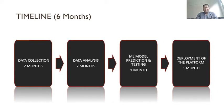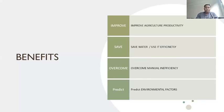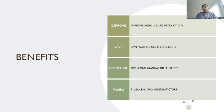The system's benefits include improved agricultural productivity, efficient water conservation, and overcoming manual inefficiency — farmers receive notifications about upcoming irrigation rather than managing it constantly. The system also predicts environmental factors to help farmers make informed decisions about crop production and business strategy.